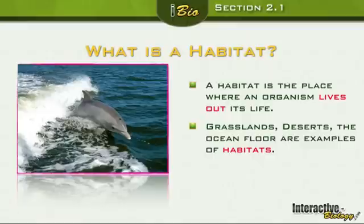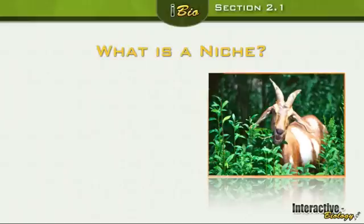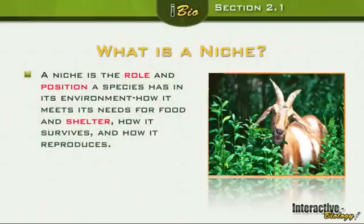A habitat is much different from a niche. What is a niche? A niche is the role and position a species has in its environment — its role and position. What do we mean by that? We mean how it meets its needs for food and shelter, how it survives, and how it reproduces. These are all descriptions of the niche of an organism.